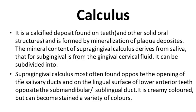Supragingival calculus is most often found opposite to the opening of the salivary duct and on the lingual surface of lower anterior teeth, opposite to the mandibular or sublingual duct. It is creamy colored and can become stained by a variety of colors depending on whether the patient drinks tea, coffee, or whatever type of food they eat.